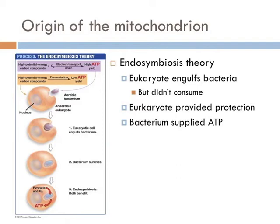Why? That eukaryotic cell could take one molecule of sugar and net 32 ATP. They could make 16 times more energy with the same molecule.